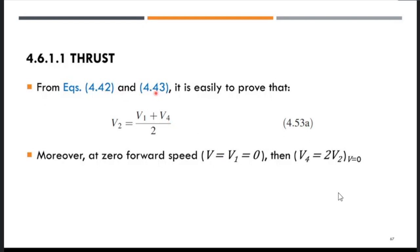From equations 4.42 and 4.43, we can prove that the velocity at station 2 equals the average of v1 and v4: v2 = (v1 + v4)/2. Moreover, at zero forward speed (aircraft stationary on the tarmac, v1 = 0), v4 = 2·v2. This means that at any speed, one half of the final velocity increase in the slipstream has already occurred at the rotor disc itself.